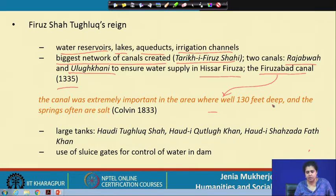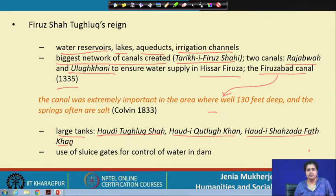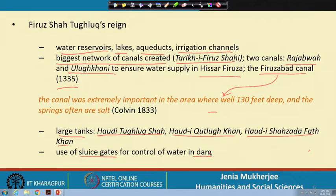Apart from canals, Firuz Shah Tughluq is credited with the construction of large tanks — including Hauz-i-Tughluqshah, Hauz-i-Qutlugh Khan, and Hauz-i-Shahzada Fath Khan. Importantly, sluice gates were constructed on dams for the first time. This is significant because it is the first mention of sluice gates, constructed with the specific function of controlling saline water in the dams.